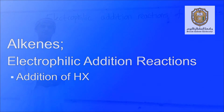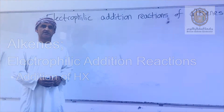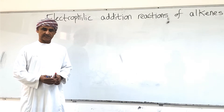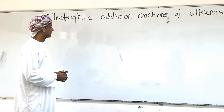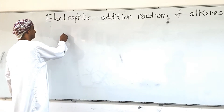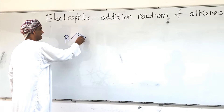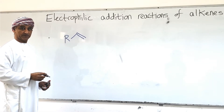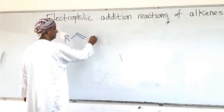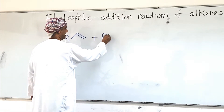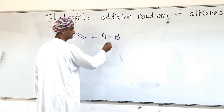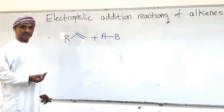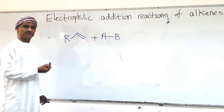In this lecture of organic chemistry videos, we will learn about electrophilic addition reactions of alkenes. Alkenes can be generally represented by this general structure. AB is a general representation of a reagent that can add to alkenes.